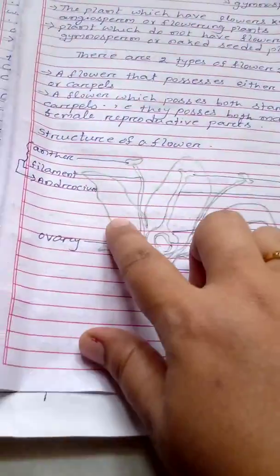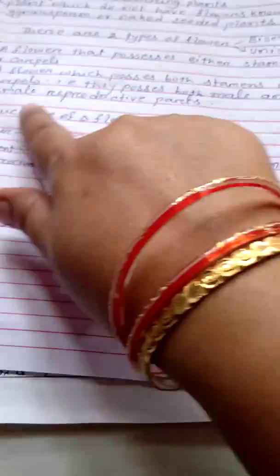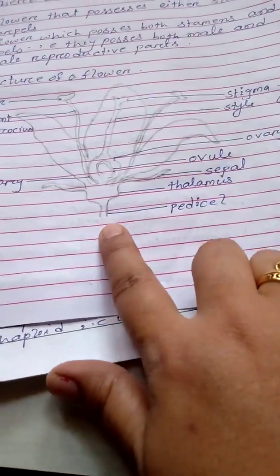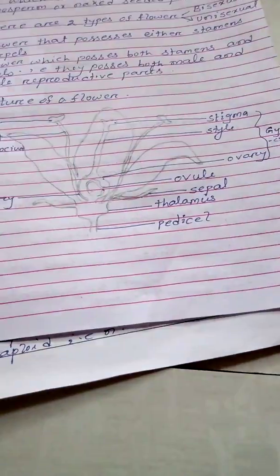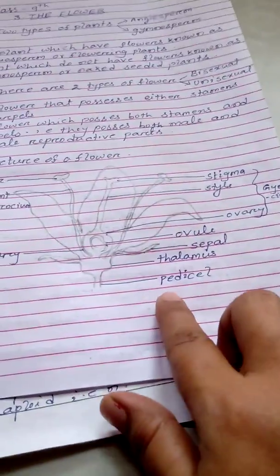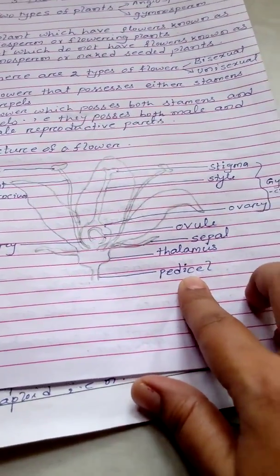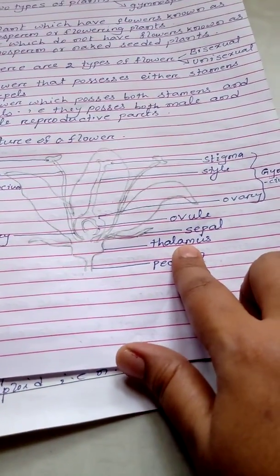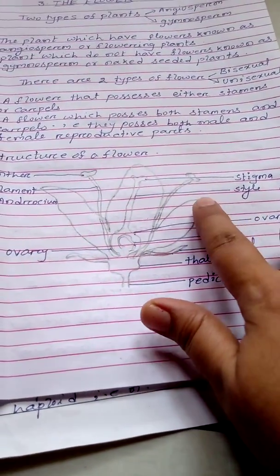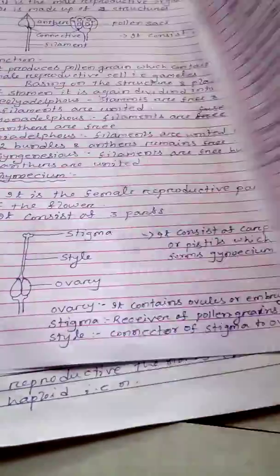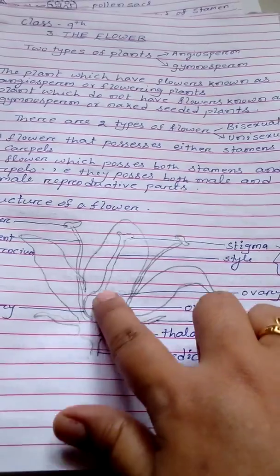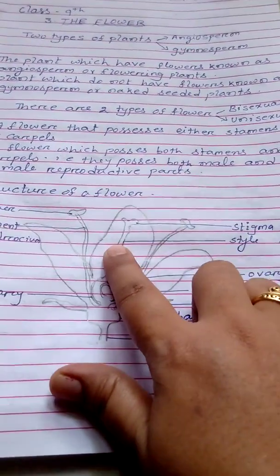Now comes to the structure of flower. First, the lowest part where the flower is attached to the branch is known as pedicel. Then comes the thalamus, then the sepals or calyx, then the petals or corolla, then the androecium or gynoecium.